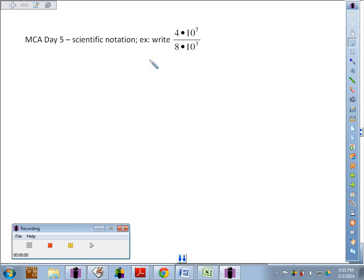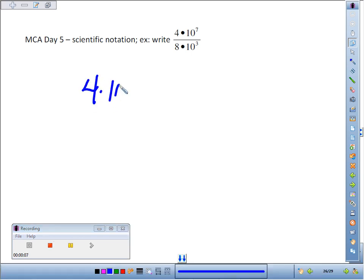MCA Day 5, Writing Numbers and Scientific Notation. We've got 4 times 10 to the 7th over 8 times 10 to the 3rd.